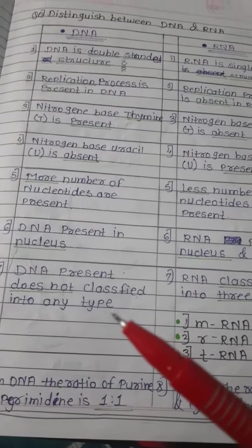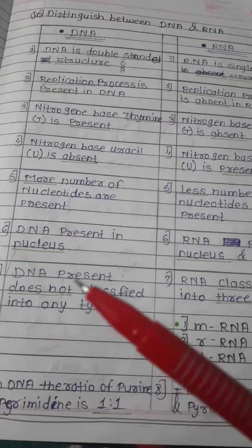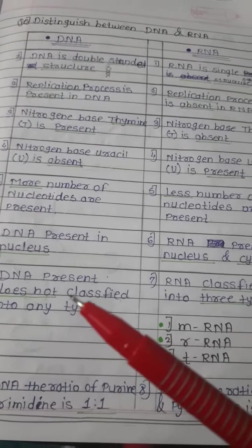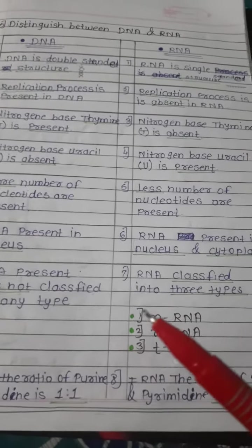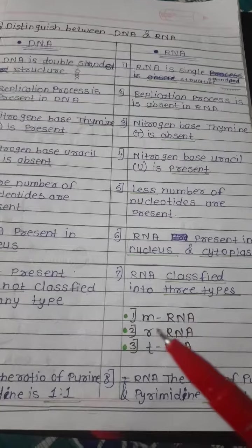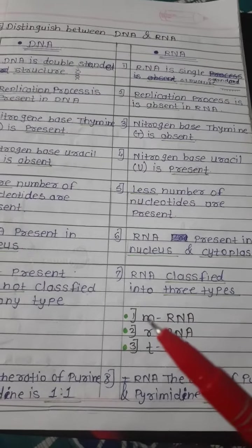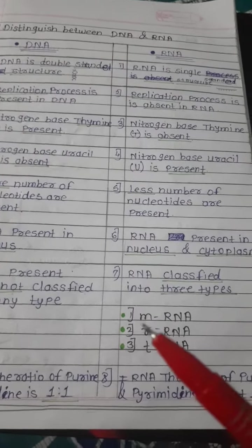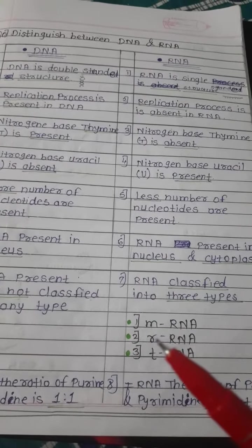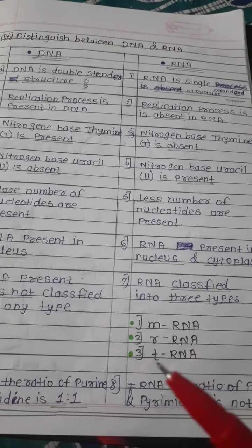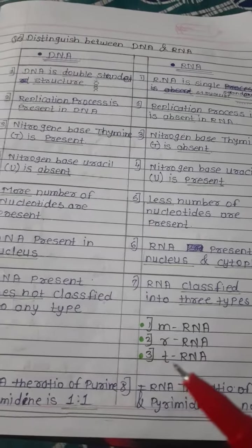DNA does not classify into any type. While RNA classifies into three types: mRNA (messenger RNA), rRNA (ribosomal RNA), and tRNA (transfer RNA).